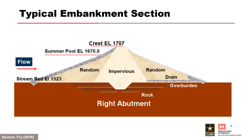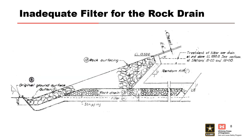The 184-foot tall embankment has an impervious core flanked by random fill zones. The downstream random fill zone has a rock-filled toe underlain by a rock drain. The rock drain was constructed with rock up to 3 cubic feet in size. The filter consisted of a layer of sand and gravel. Borings have revealed that the filter is missing in many areas, which suggests that it likely washed into the drain.